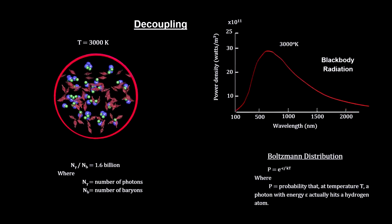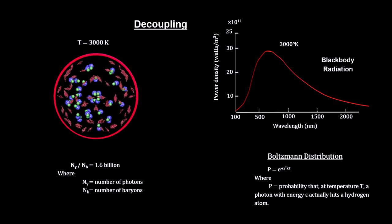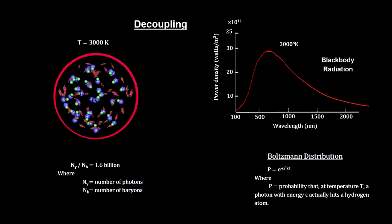The current figure is around 3,000 degrees Kelvin, the surface temperature of a cool star like Proxima Centauri.